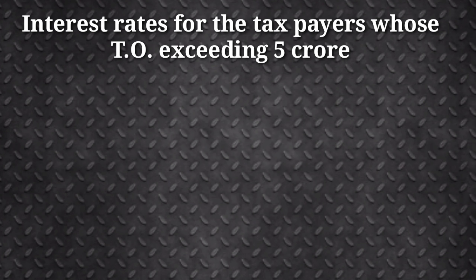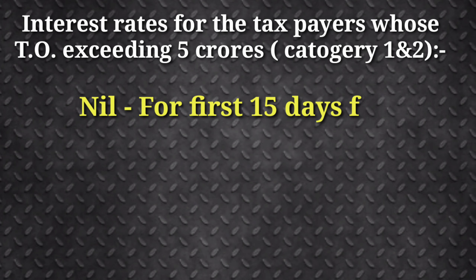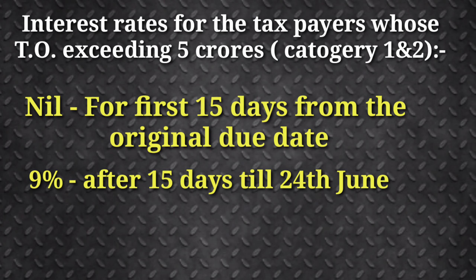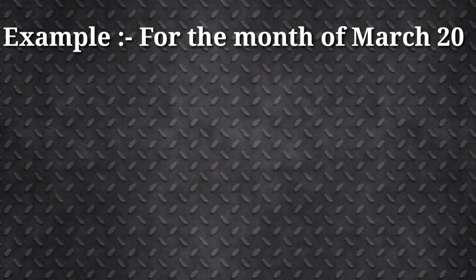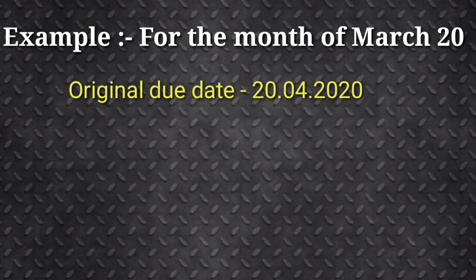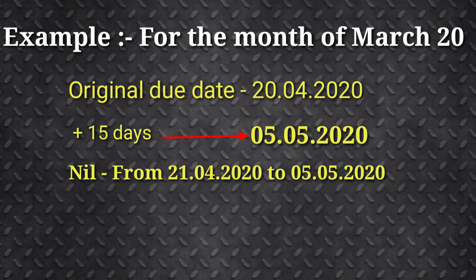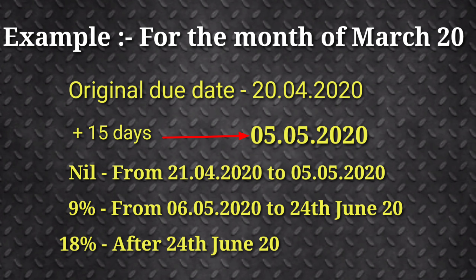For taxpayers whose aggregate turnover exceeds 5 crores: Nil rate for the first 15 days from the original due date, 9% after 15 days till 24th June, and 18% thereafter. For example, for the month of March, the original due date was 20th April 2020. Interest was 0% from 20th April to 5th May 2020, then 9% from 5th May to 24th June 2020, and 18% after 24th June 2020.